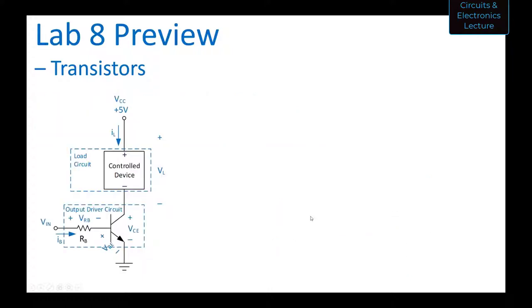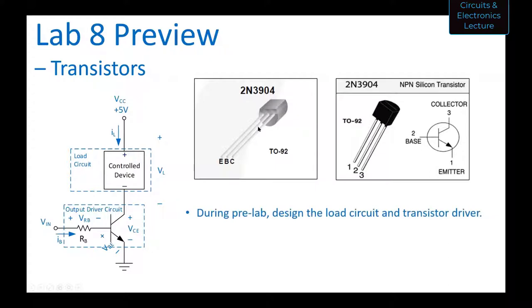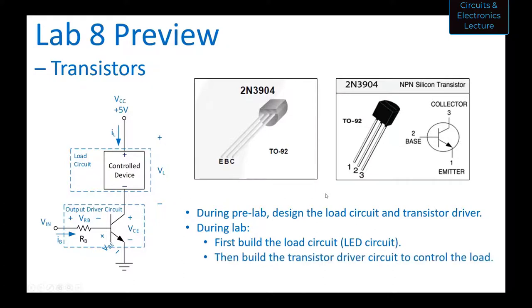Your whole circuit will have the controlled device connected together with the transistor. You'll be measuring values: the voltage across the resistors, VCE, and IB. You'll use the 2N3904 transistor. During the pre-lab you'll design the LED circuit and transistor driver, and during the lab you'll first build the load circuit to light up the LED, then build the transistor driver circuit to control it, followed by a pulse width modulation experiment.